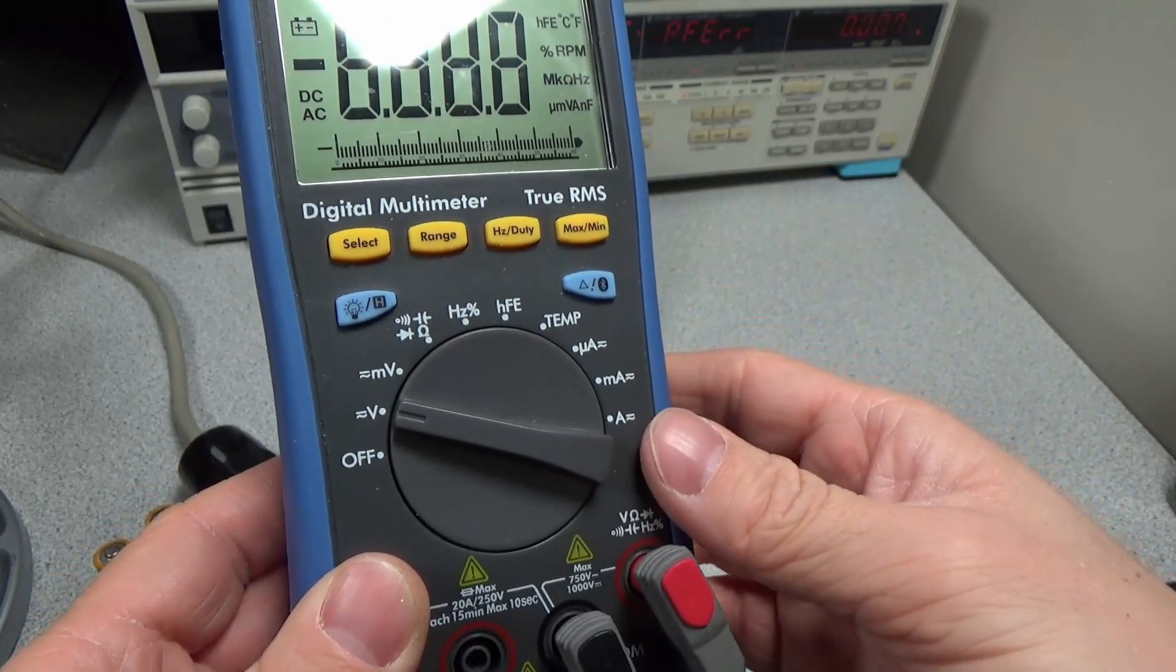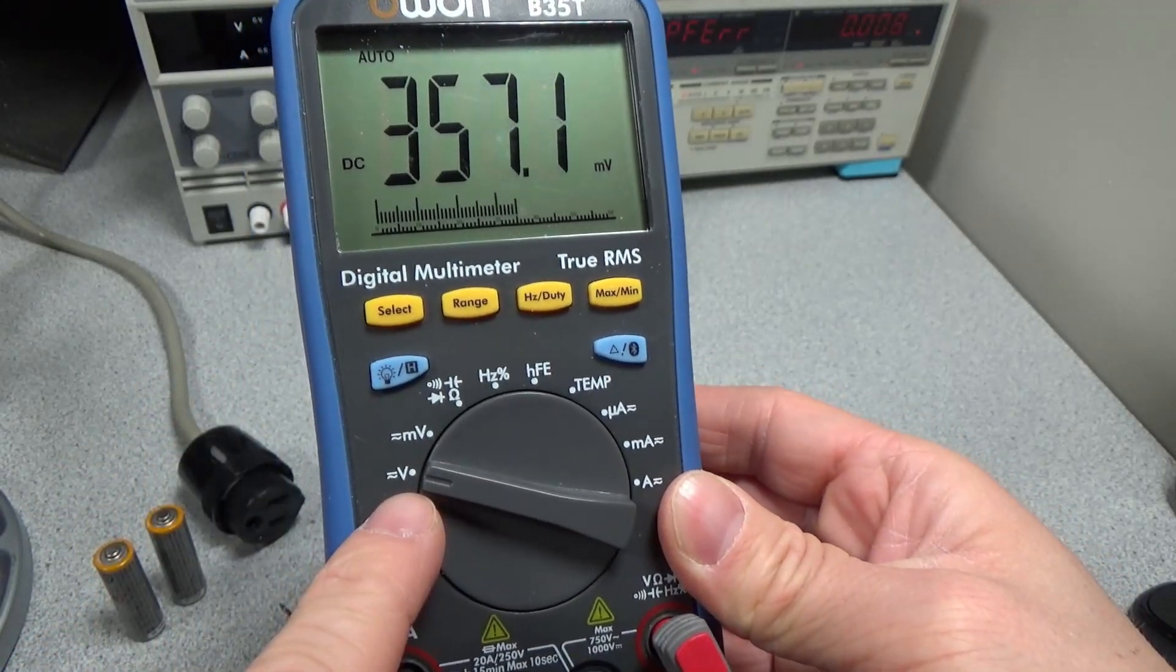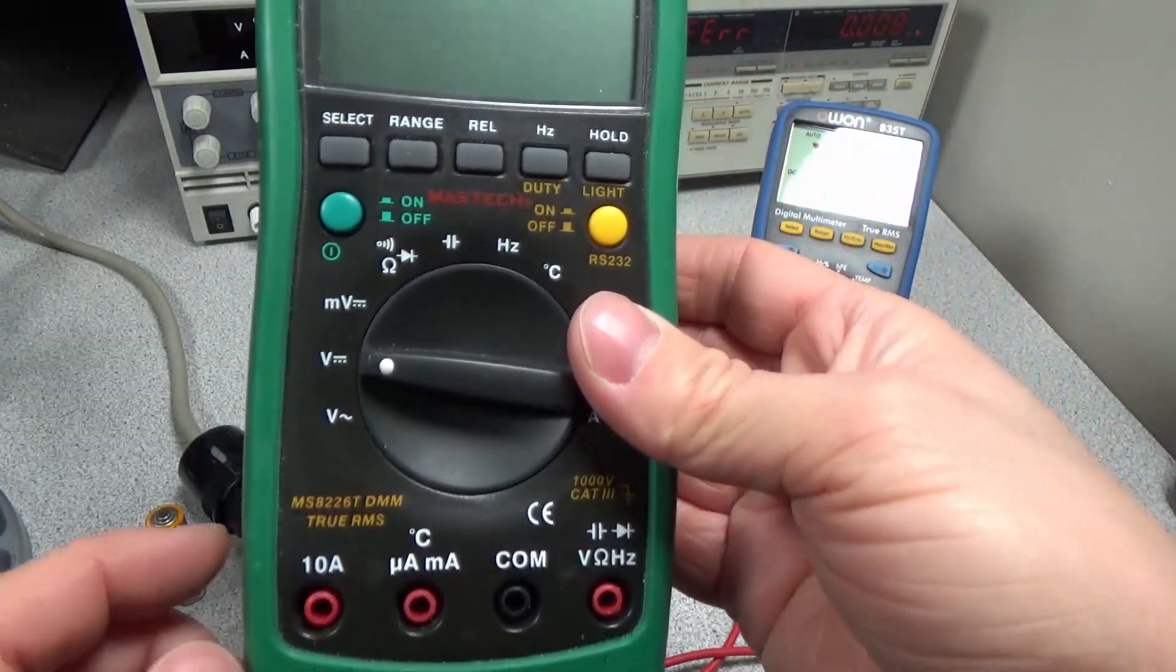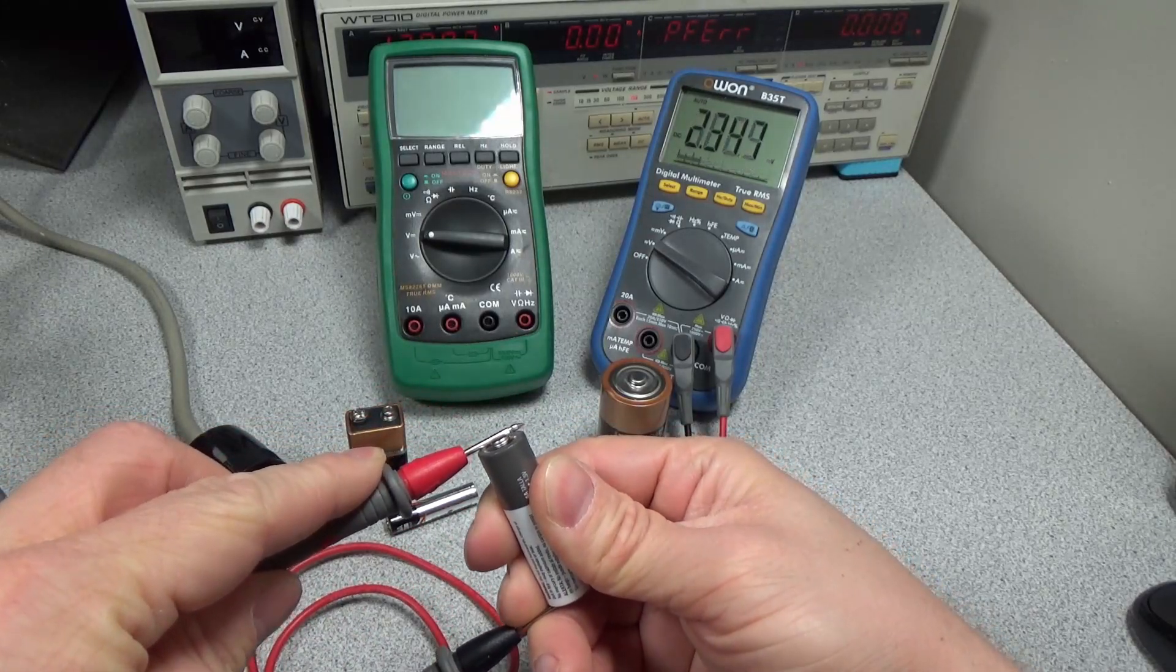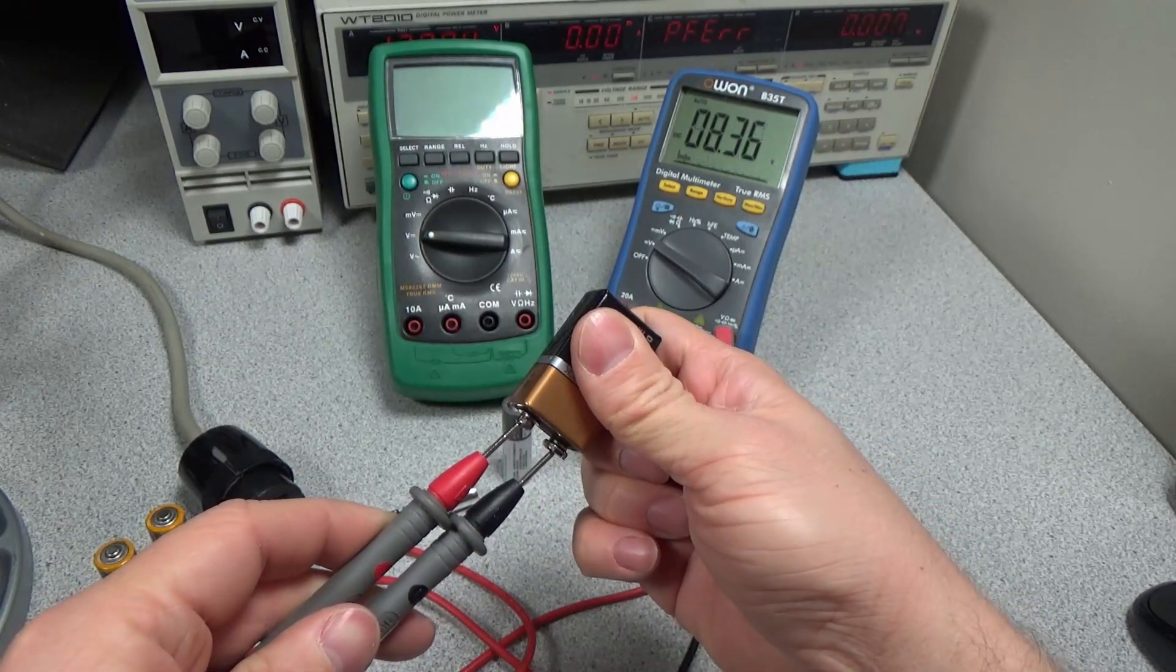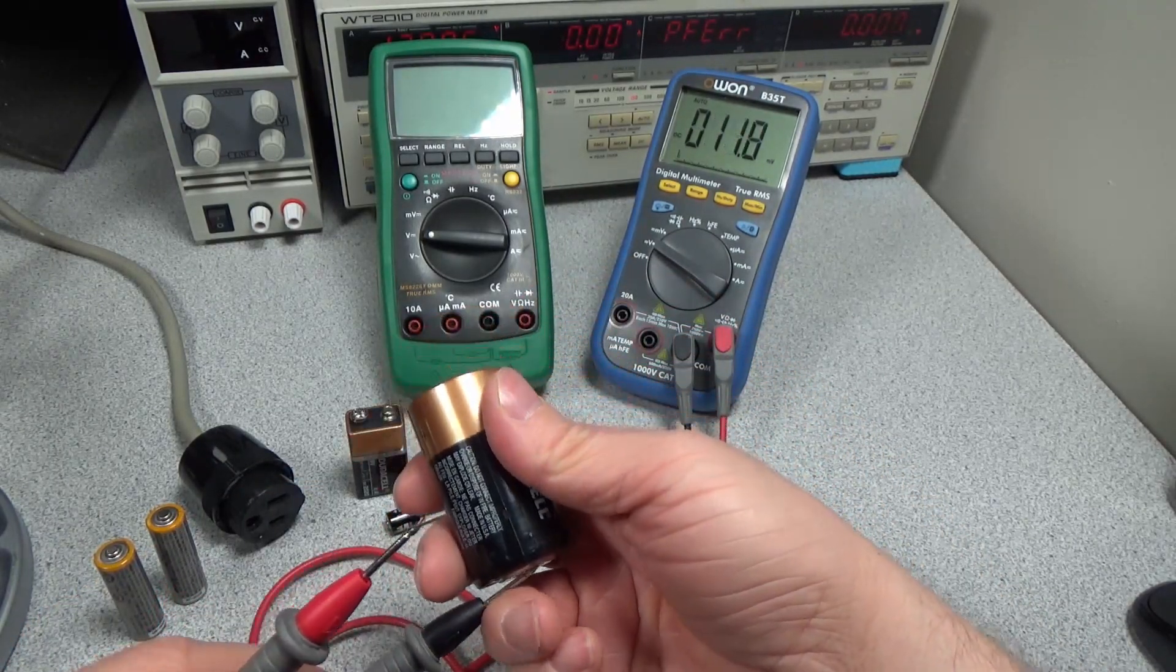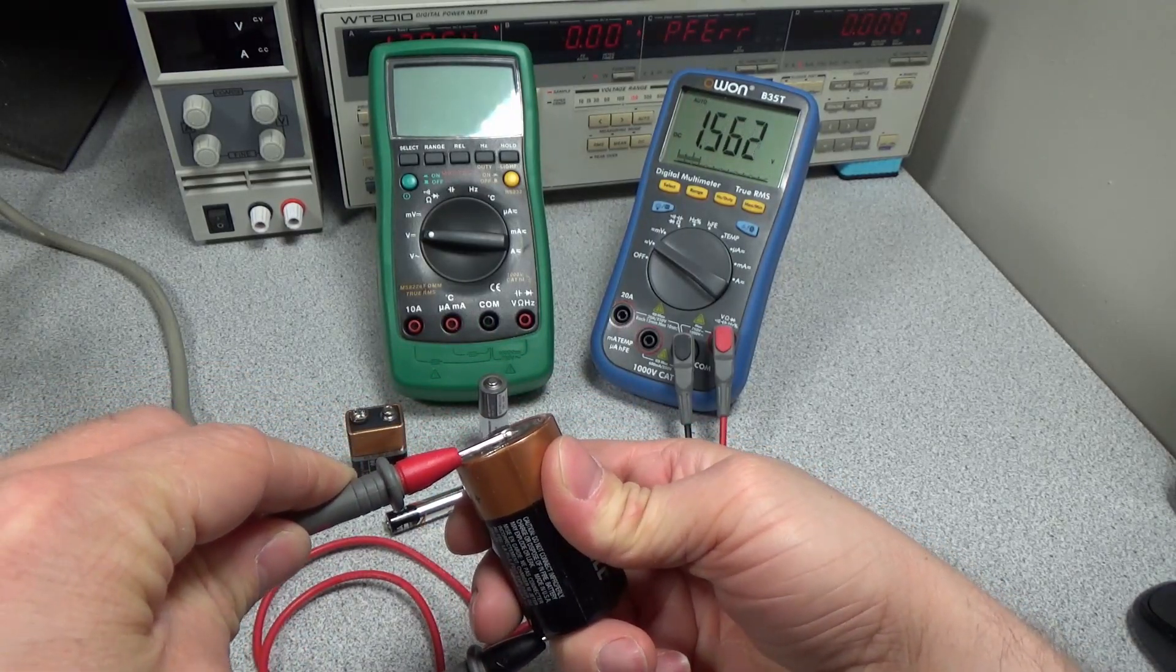I have an instrument here called a multimeter. More on this in a future video. This can measure voltage. In this case direct current or DC voltage. The solid and dashed line setting or DCV setting. As we can see, a AA battery measures about 1.5 volts. A 9 volt battery measures, surprise, about 9 volts. A D cell battery also measures 1.5 volts, though it is bigger. The D cell is really the same as a AA, but it stores more energy.